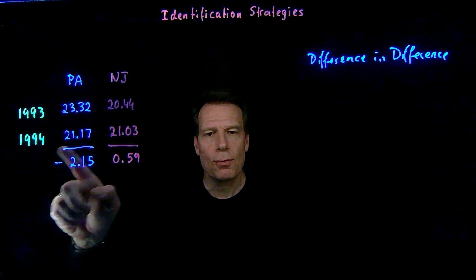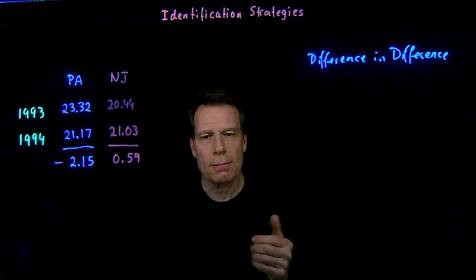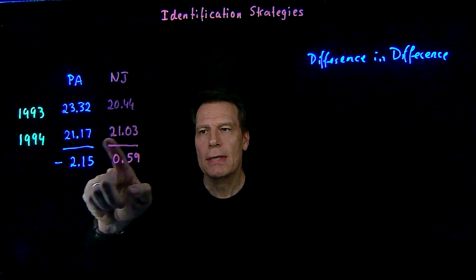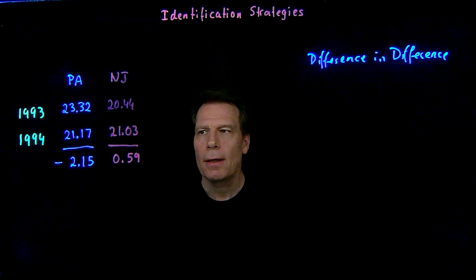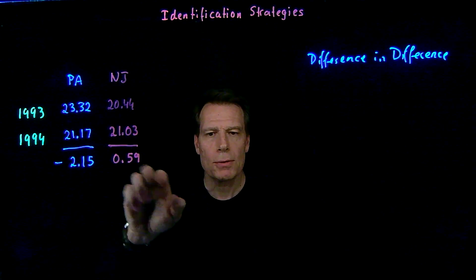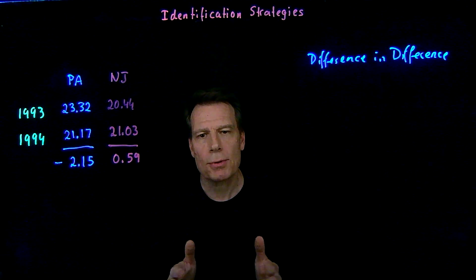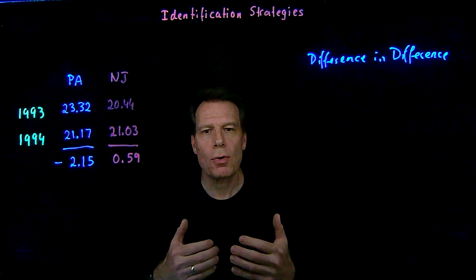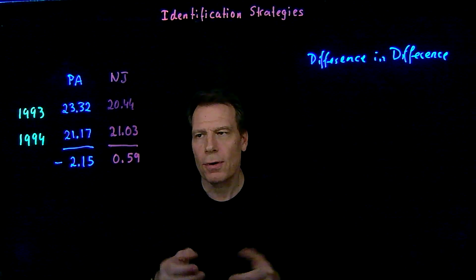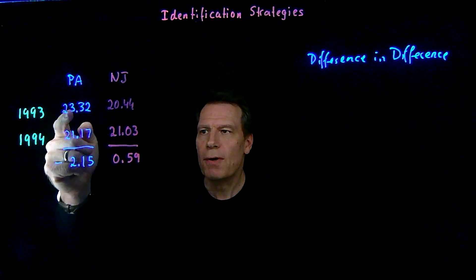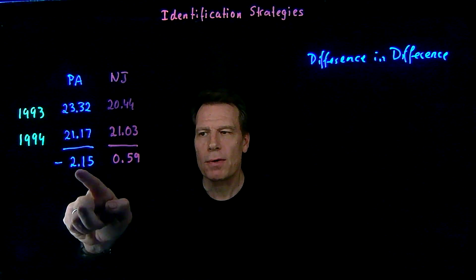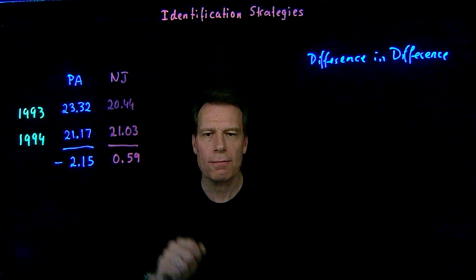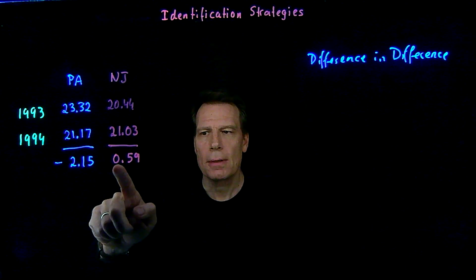Then in 1994, after the increase in the minimum wage in New Jersey, he again went to those same restaurants and found that the average number of employees had changed in both places. In Pennsylvania, the average number of employees per fast food restaurant fell by 2.15 between 1993 and 1994. But it increased in New Jersey by 0.59.